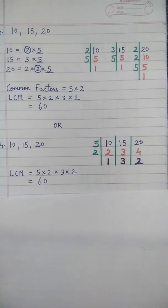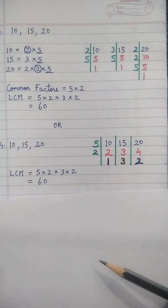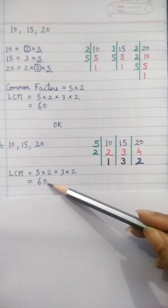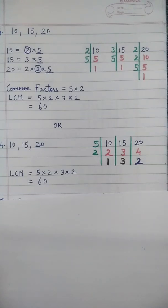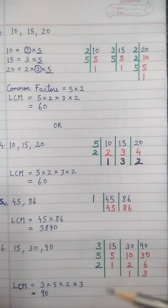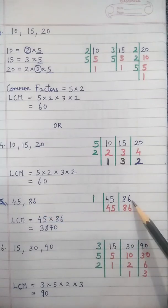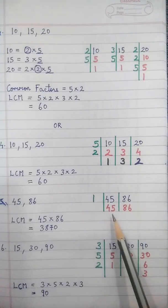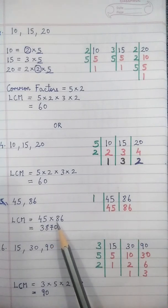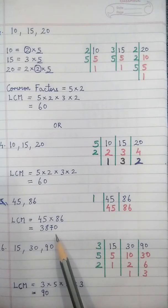LCM — the least common multiple — is the smallest number that is divisible by each of the given numbers. So 60 is the smallest number divisible by 10, 15, and 20. Sum 5: 45 and 86 have no common factor, so we can factorize only by 1 and LCM = 45 into 86 = 3870.